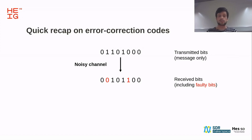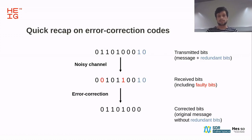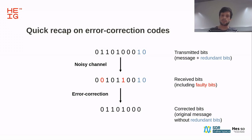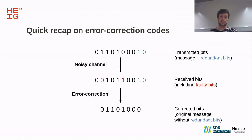Error correction codes are useful when we send messages through a noisy channel. Sometimes bits get lost, sometimes bits get flipped, and we get a corrupted message. The solution is error correction codes: we add redundant information to the message, and if not too much information is lost, we can recover the original message. For a block error correction code, we append redundant bits at the end of a message, and the value of these redundant bits is a function of the message we want to encode.